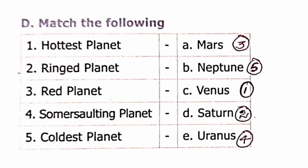Somersaulting planet – Uranus. Coldest planet – Neptune. Summary: Hottest – Venus, Ringed – Saturn, Red – Mars, Somersaulting – Uranus, Coldest – Neptune.